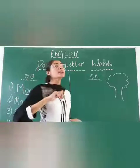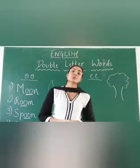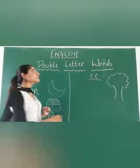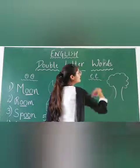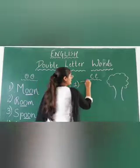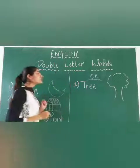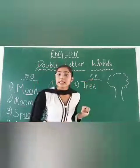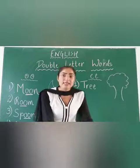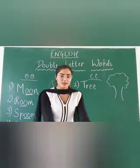We have completed the words with double O — two O's. Now we will be seeing words with double E. What is this? This is a tree. T, R, double E. So what is the phonics sound of double E? It is 'ee'. Remember, single E sounds like 'e' as in bed or red.